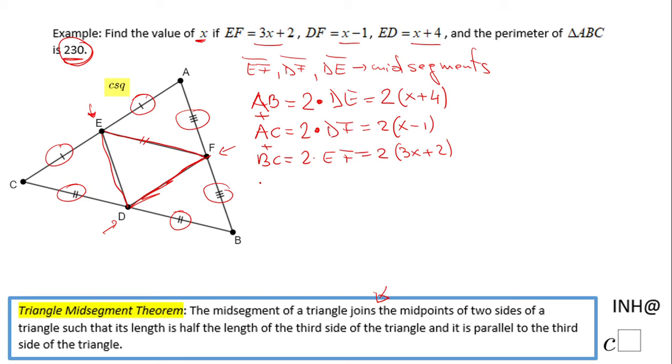2 times the quantity (x + 4) plus 2 times the quantity (x - 1) plus 2 times the quantity (3x + 2) equals 230. You can use the distributive property here, but if you notice we have this multiplication of 2, we can divide by 2 to get a simpler form. So we can have (x + 4) plus (x - 1) plus (3x + 2), and we're going to divide that 230 by 2 and you get 115.